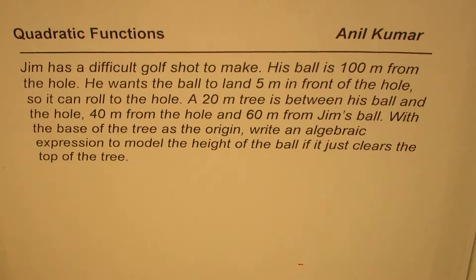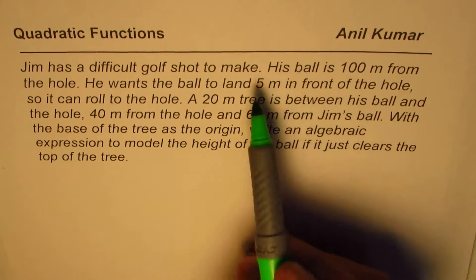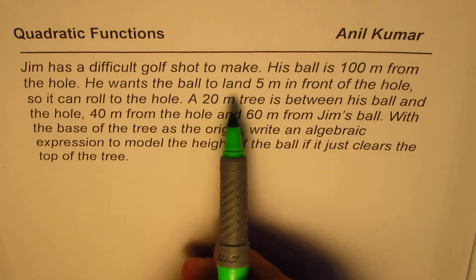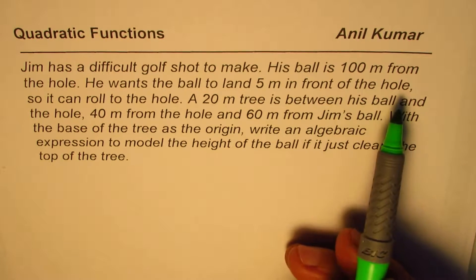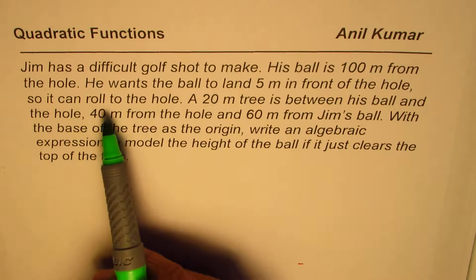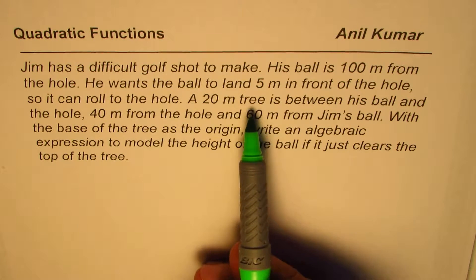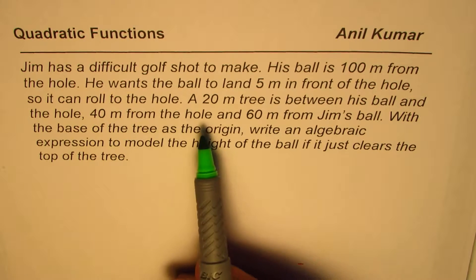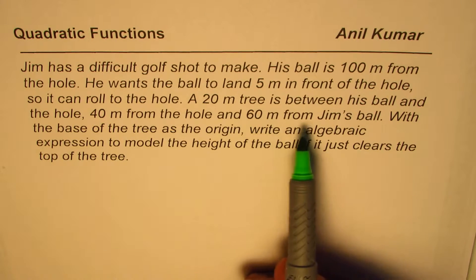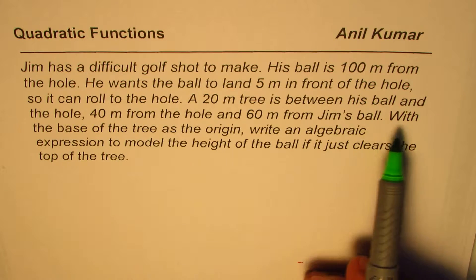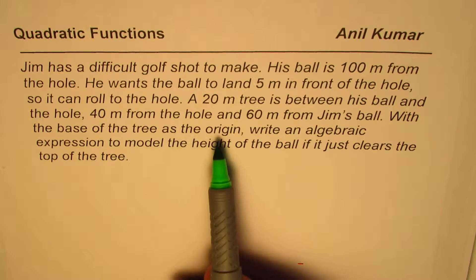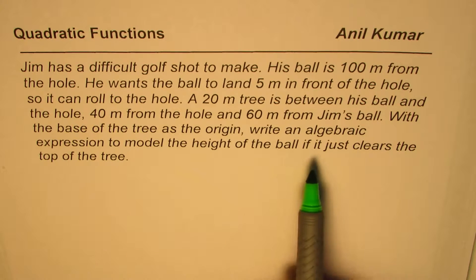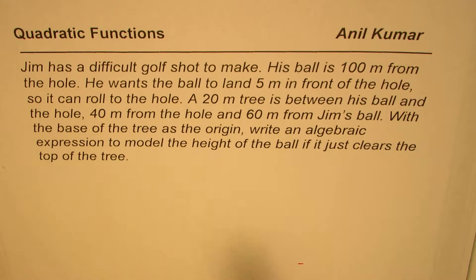Jim has a difficult golf shot to make. His ball is 100 meters from the hole. He wants the ball to land 5 meters in front of the hole so it can roll to the hole. A 20-meter tree is between his ball and the hole, 40 meters from the hole and 60 meters from Jim's ball. With the base of the tree as origin, write an algebraic expression to model the height of the ball if it just clears the top of the tree.